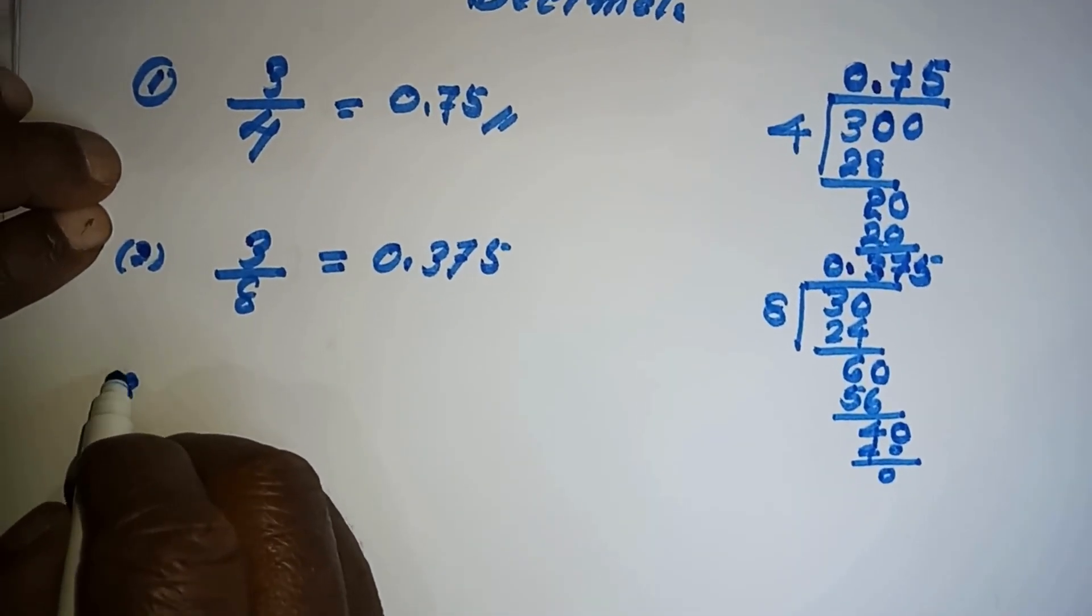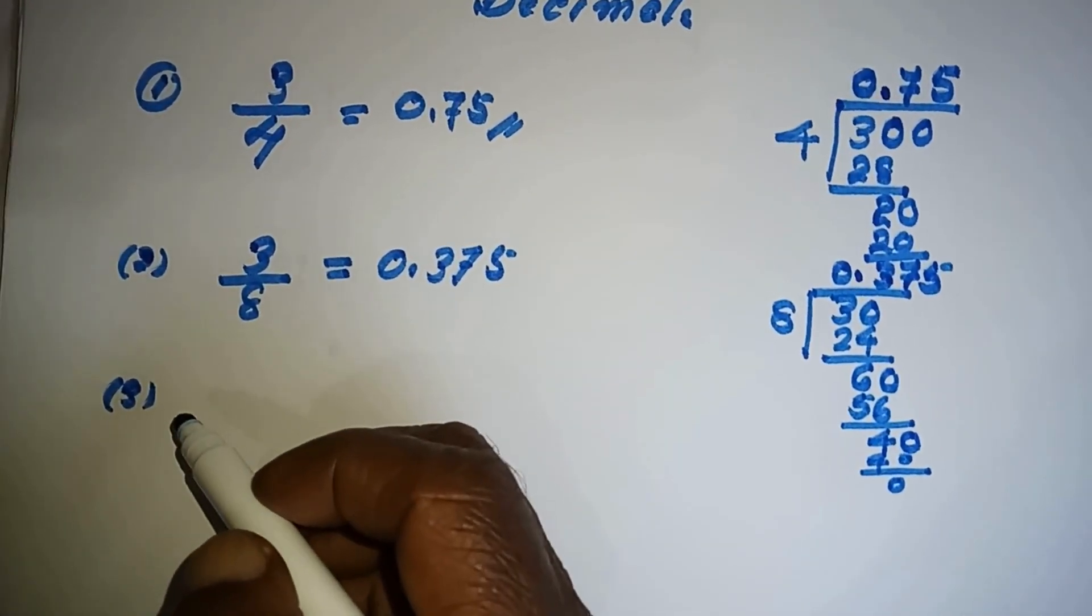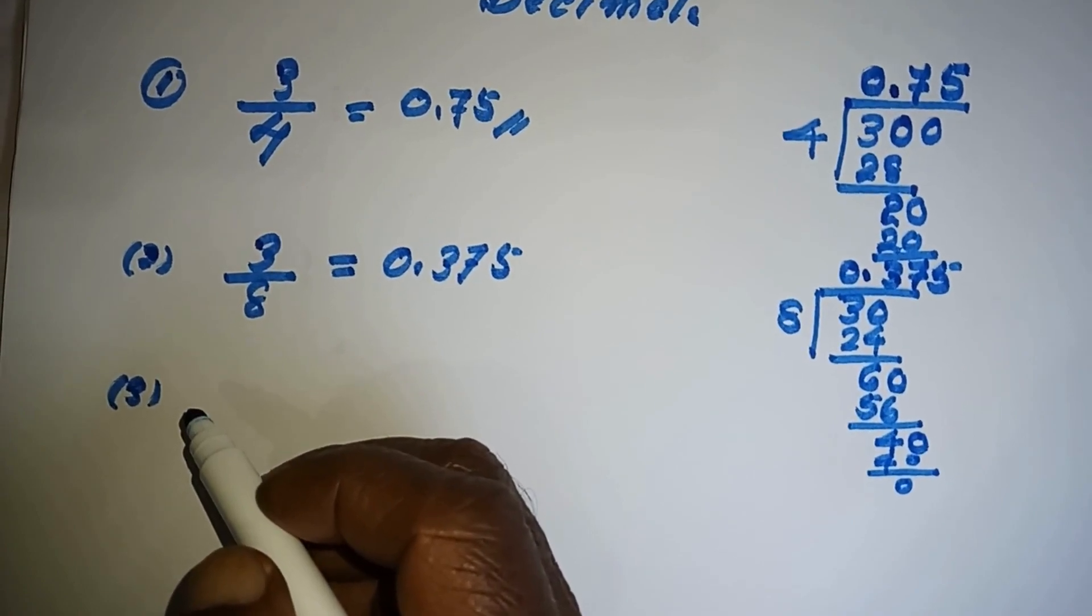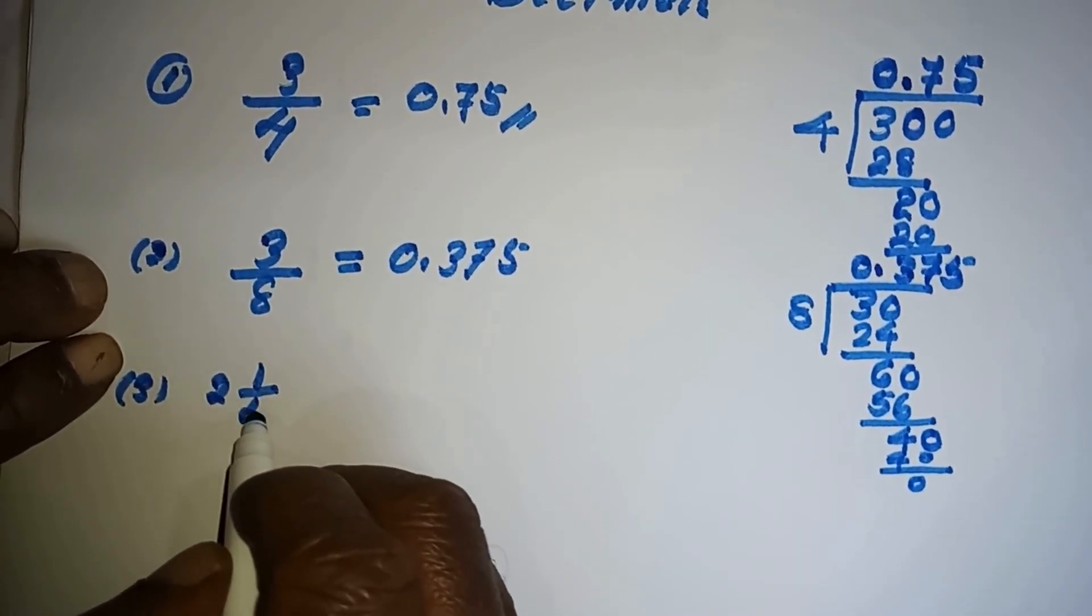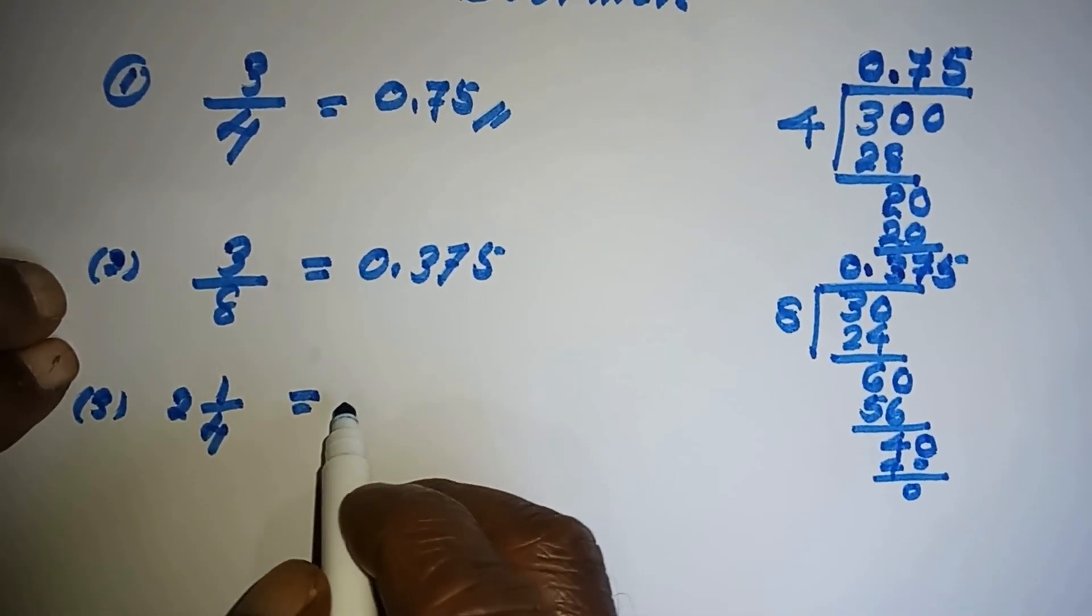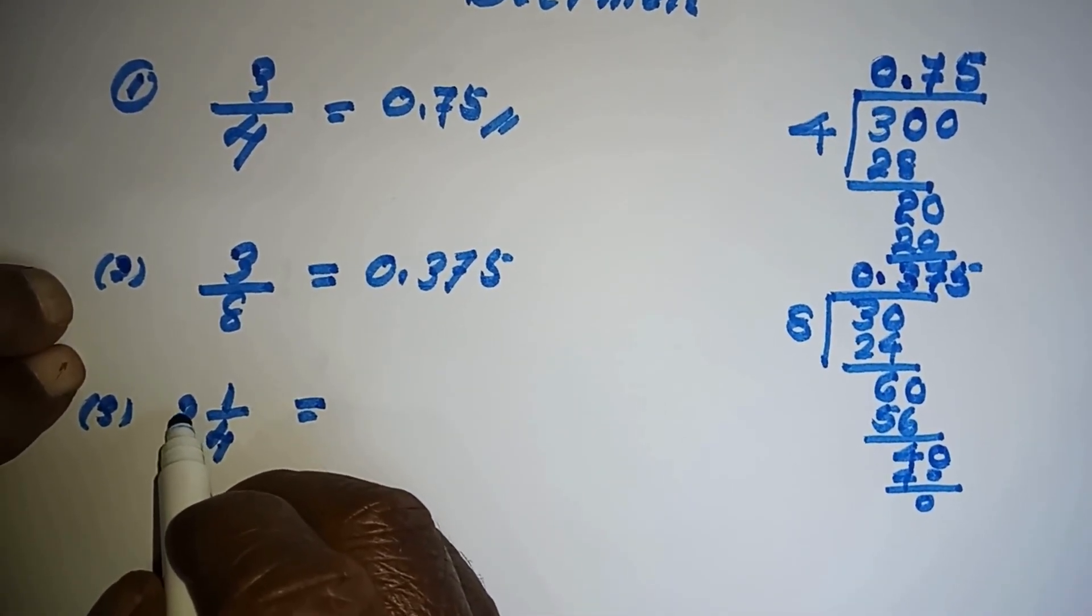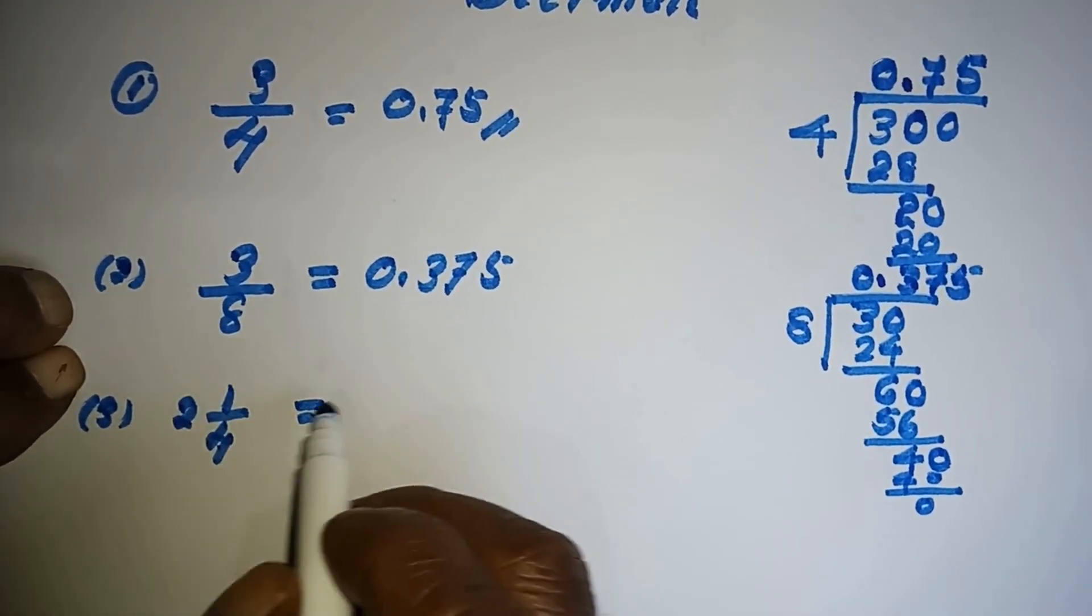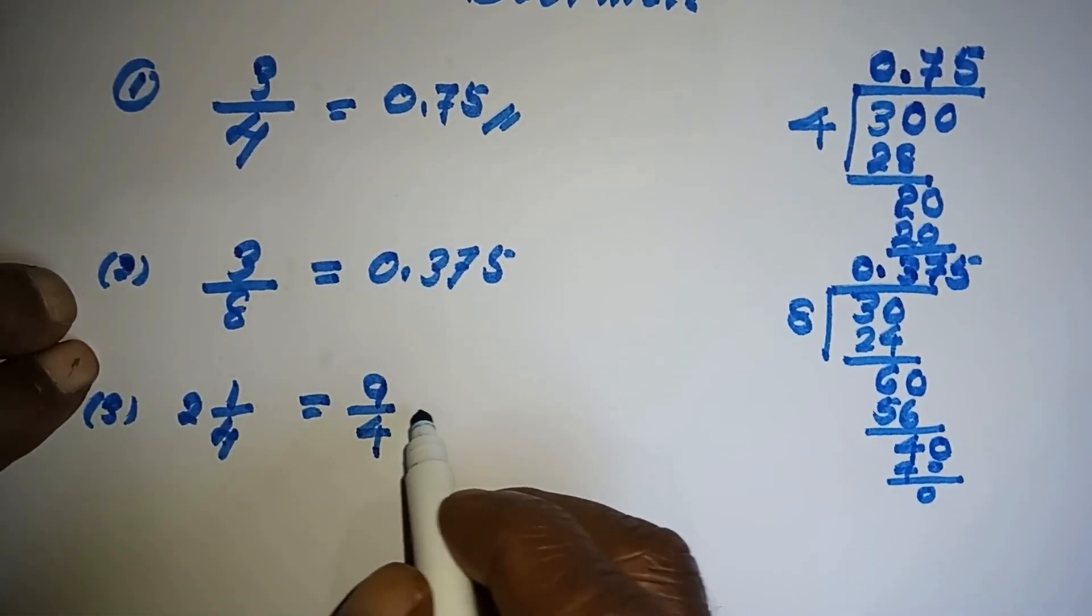Let's take another one. We'll take a mixed fraction, say 2 and 1/4. Now first we have to convert this to an improper fraction. How to make it? 4 into 2 plus 1, that is 9, 9 over 4. This is the fraction now.